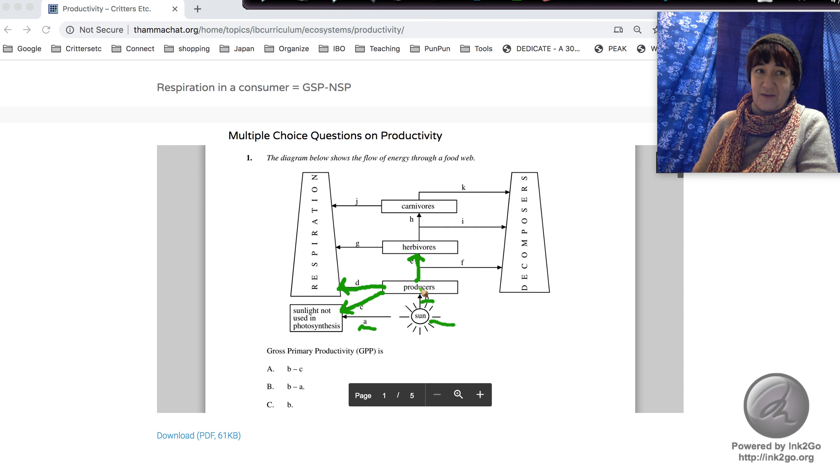And of course, energy could be passed to decomposers as well, which is right here. Gross primary productivity—the gross part means big.